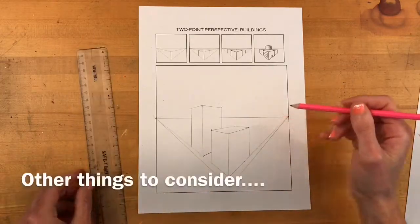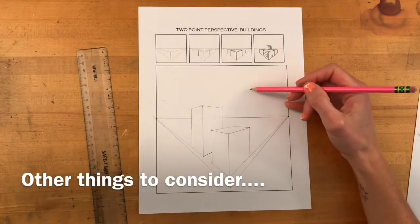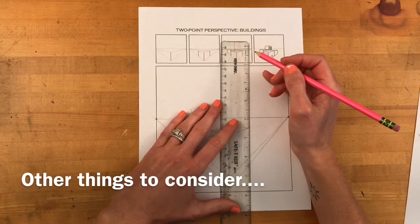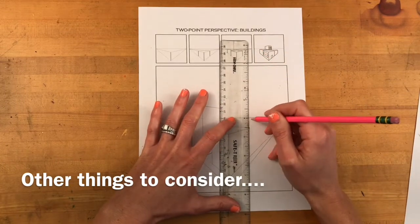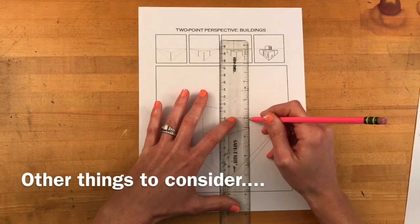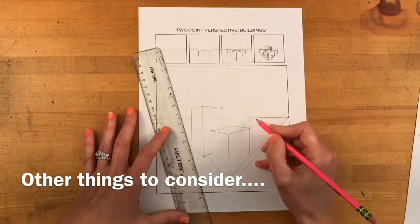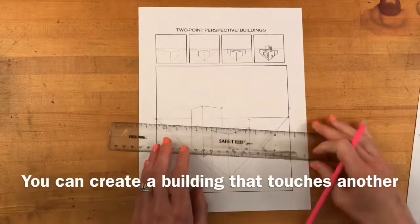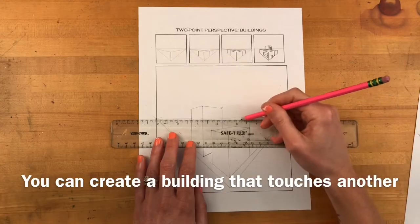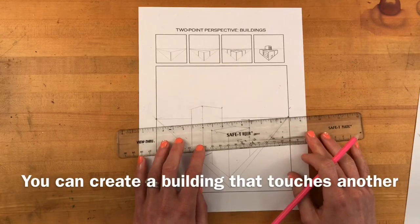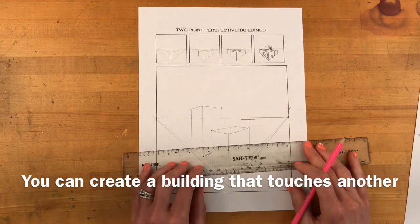As you create your scene, consider placing a building attached to another building. You could think of this like a townhouse. So you can use the wall that you already have on one building and just bring the line up a little bit higher. This way it's going to look like the buildings are touching each other.